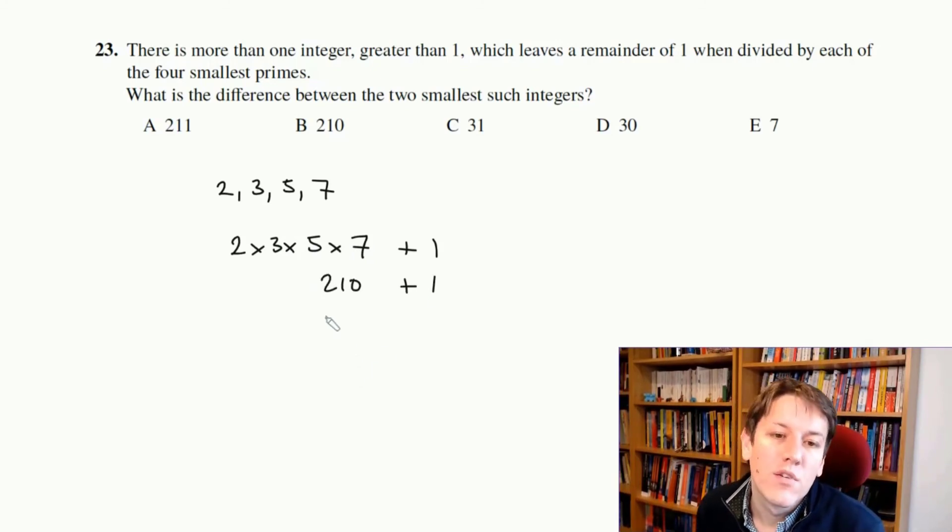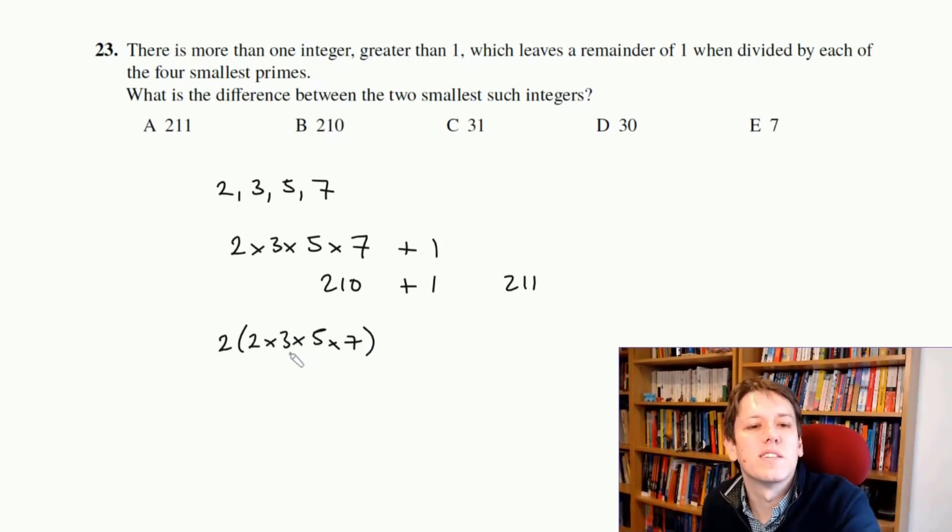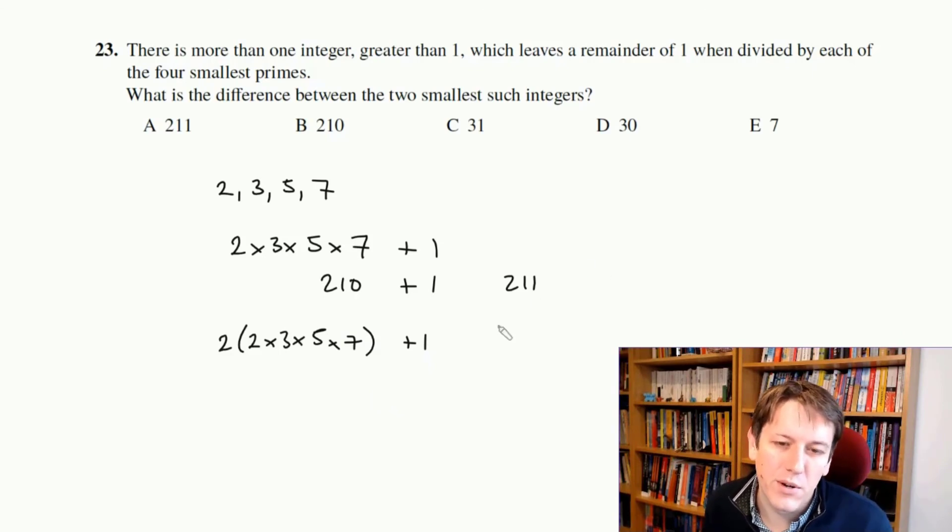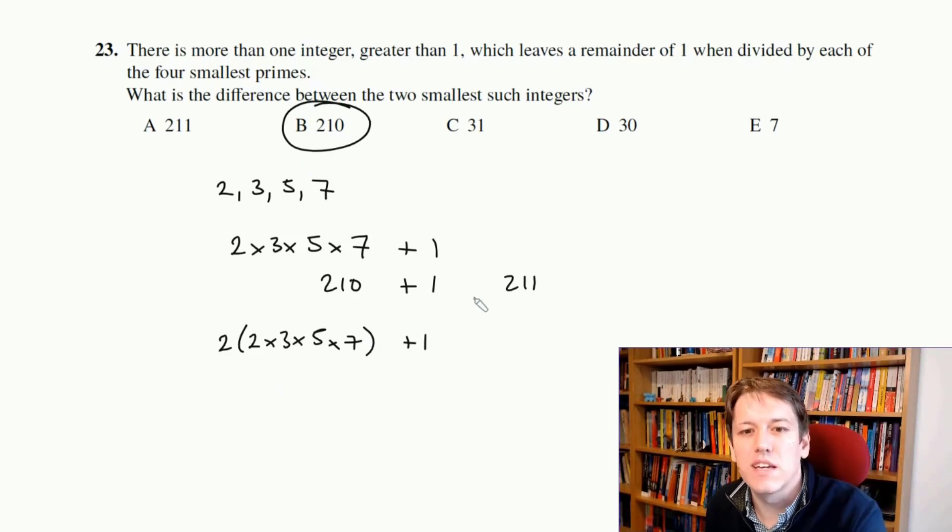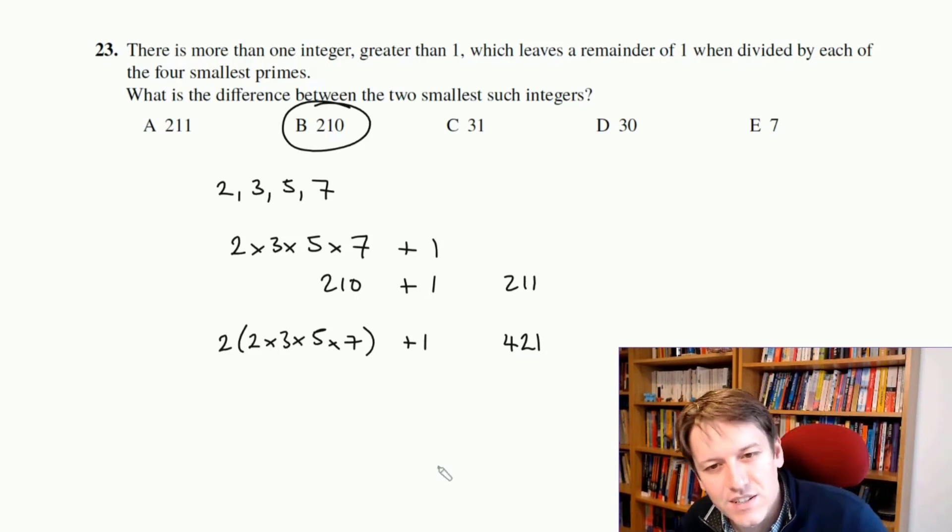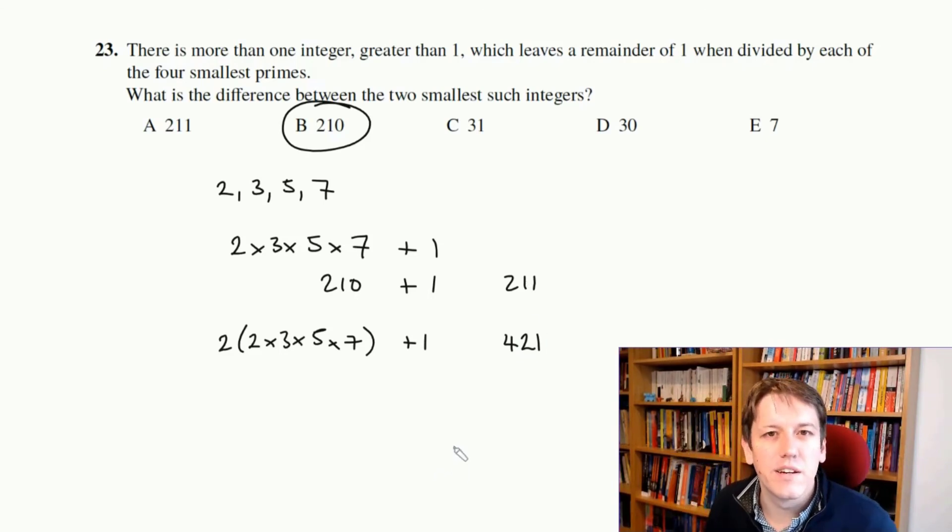Now, the next number that this would be true of would just be, not double the whole number, but if I did 2 lots of 2 times 3 times 5 times 7, I could make the same argument. This is now the next thing that's a multiple of 2, 3, 5, and 7. So if I add 1 to it, it's the next thing that leaves a remainder of 1 when divided by all of them. So you can either just jump now and say, well, the answer's 210 because this is 210 bigger than this one, or you could actually write down that this is 421 and then do 421 minus 211 is 210. But either way, the answer is B, 210.